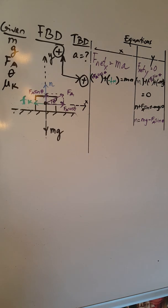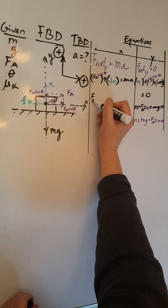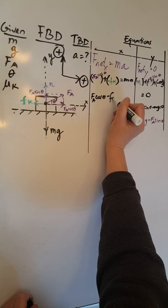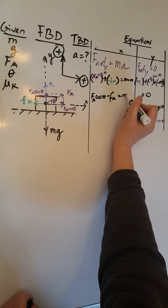When we simplify this, we are going to have FA cosine theta minus FK equals M times A.